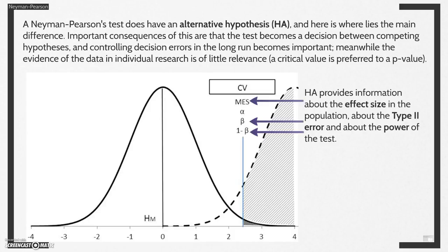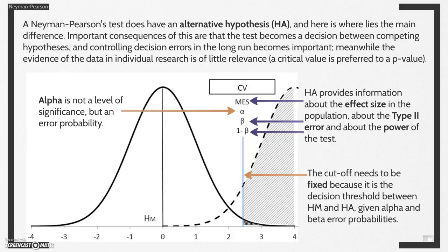Now, the alternative hypothesis provides information about the effect size in the population, about the Type II error, and about the power of the test. Alpha is not a level of significance anymore, it is an error probability. The cutoff, therefore, needs to be fixed, because it is a decision threshold between the main hypothesis and the alternate hypothesis, given the alpha and beta error probabilities.